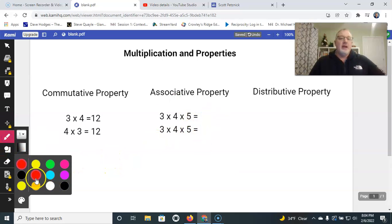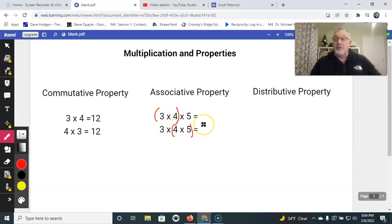So I'm going to go ahead and put, let's just put red ones in. So if I multiply the three and the four first, then the five, I'm going to get the same answer if I multiply the four and the five first. Because remember, whatever we do in parentheses has to be done first.